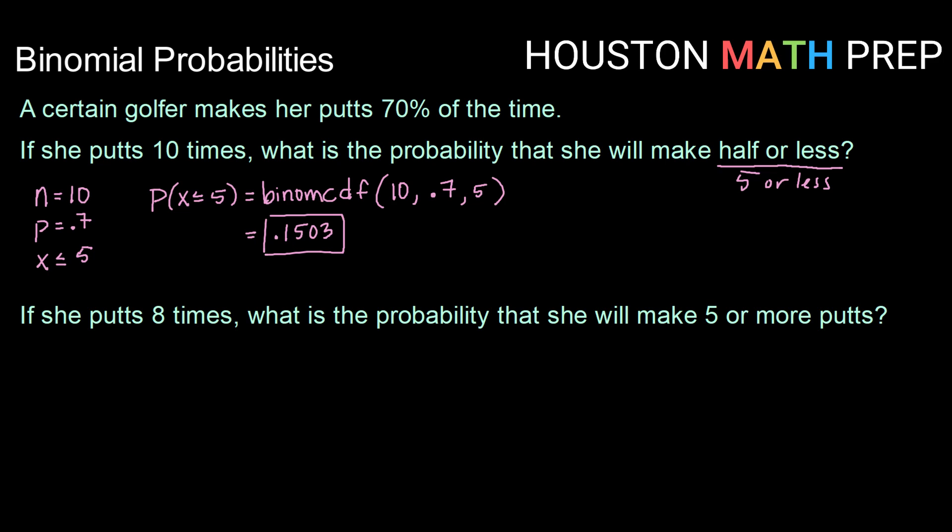Alright, using the same information, let's answer if she putts 8 times, what is the probability that she will make 5 or more putts? So here we're looking at almost the opposite, 5 or more.